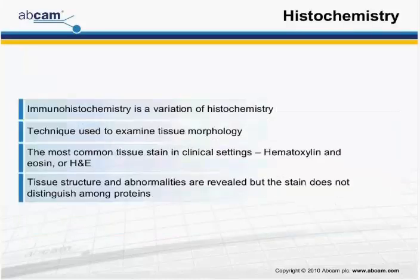This technique allows researchers to study protein expression and localization, and is widely used in basic and clinical research. So how does immunohistochemistry come about? IHC is a variation of histochemistry, a technique used by histologists to examine tissue morphology.